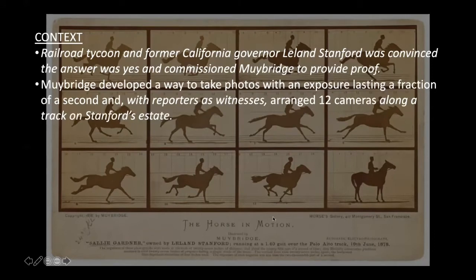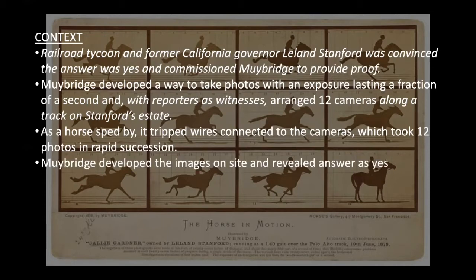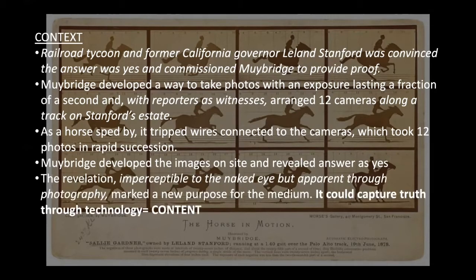Here's the story behind it. A railroad tycoon and former California governor was convinced the answer was yes, and he commissioned Muybridge to provide the proof. Muybridge developed a way to take photos with an exposure lasting a fraction of a second, and with reporters as witnesses, arranged 12 cameras along a track on the tycoon's estate. As a horse sped by, it tripped the wires connected to the cameras, which took 12 photos in rapid succession. Muybridge developed the images on site and revealed the answer was yes. This revelation, which the naked eye cannot see but is apparent through photography, marked a new purpose for the medium — it could capture truth through technology.